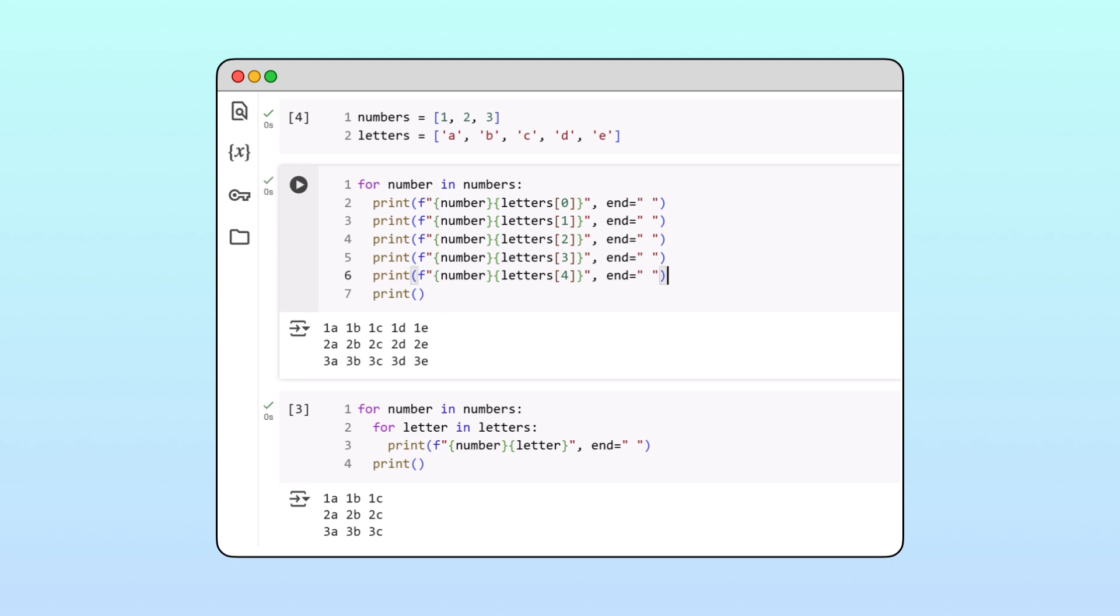But if we use a nested loop, no changes to the code are needed. We can simply rerun the cell, and the output automatically reflects the new columns. Awesome!